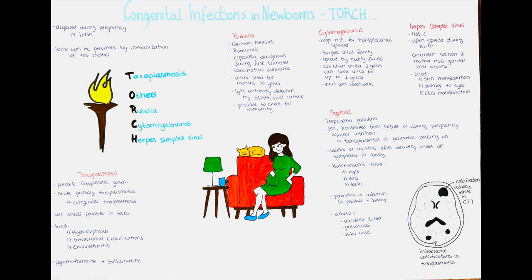T stands for the parasitic disease toxoplasmosis. O stands for others. R stands for rubella. C stands for cytomegalovirus. And H stands for herpes simplex virus. There are also other infections not under this acronym, like HIV, the Zika virus, and lymphocytic choriomeningitis.